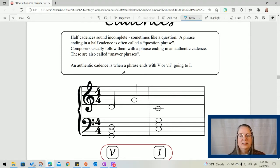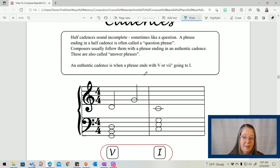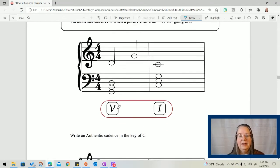Okay. An authentic cadence is when a phrase ends with a five or a seven to a one chord. That's the dominant to the tonic. And here it is five to one. Very finished. Very solid.